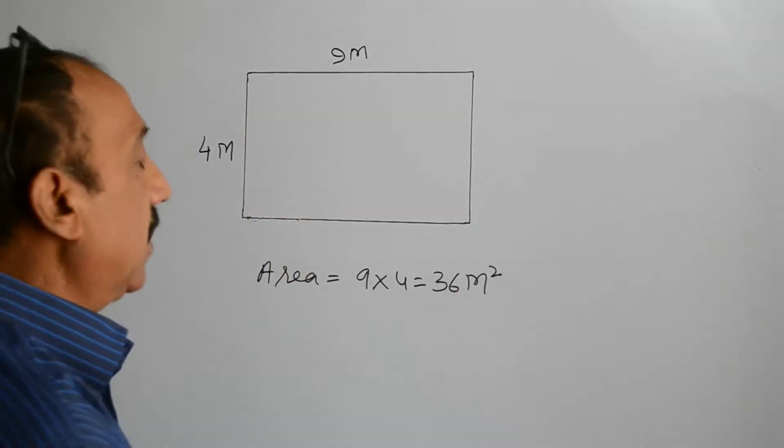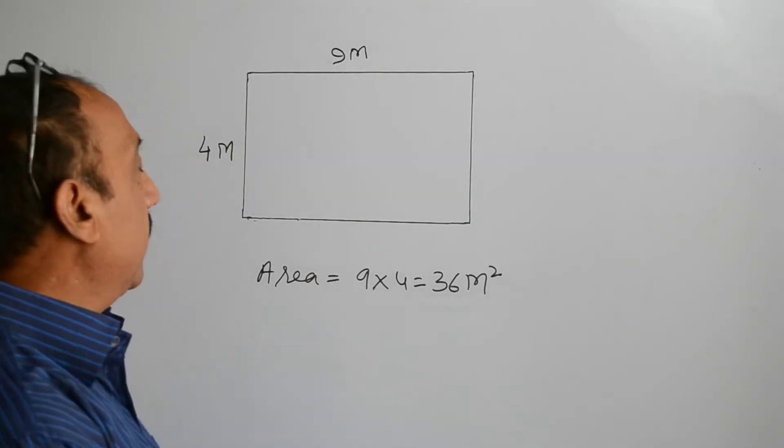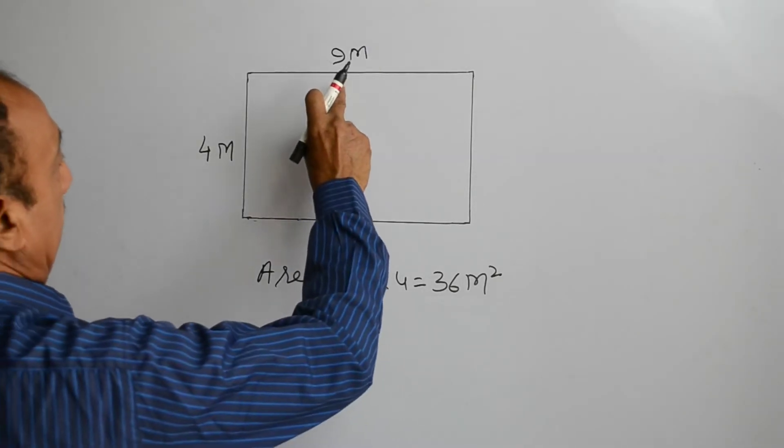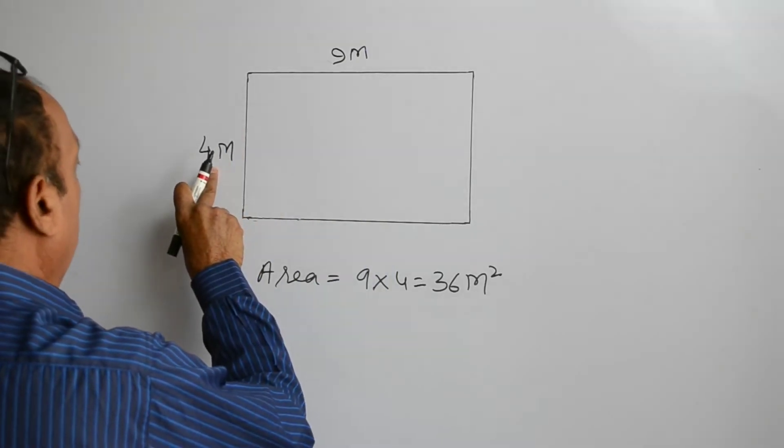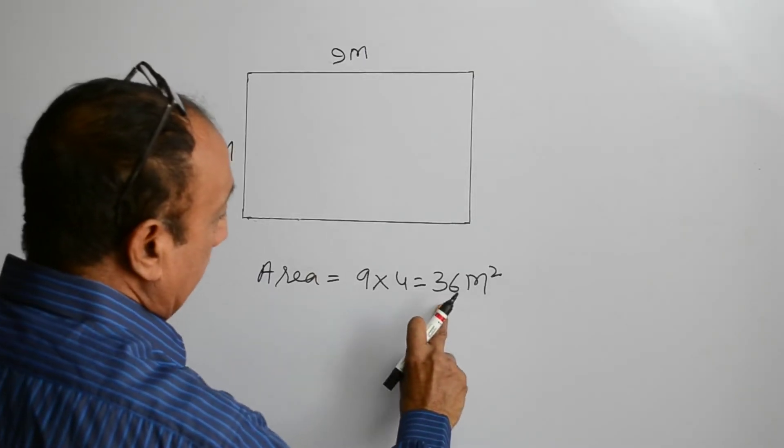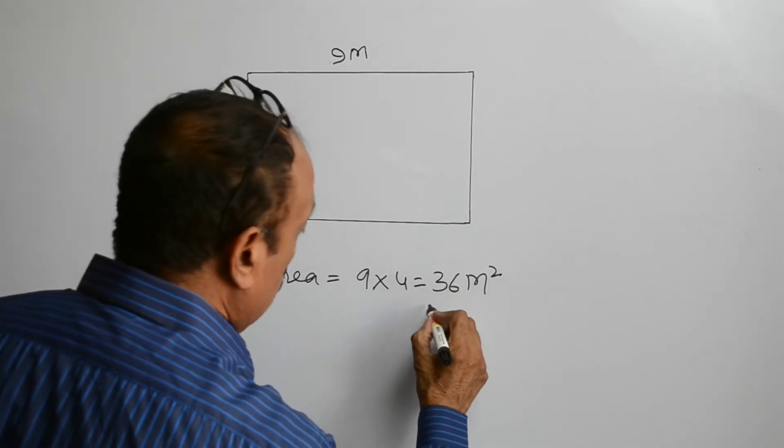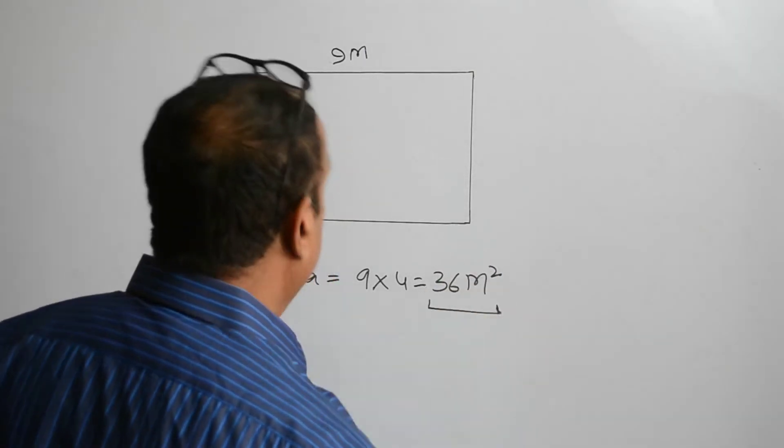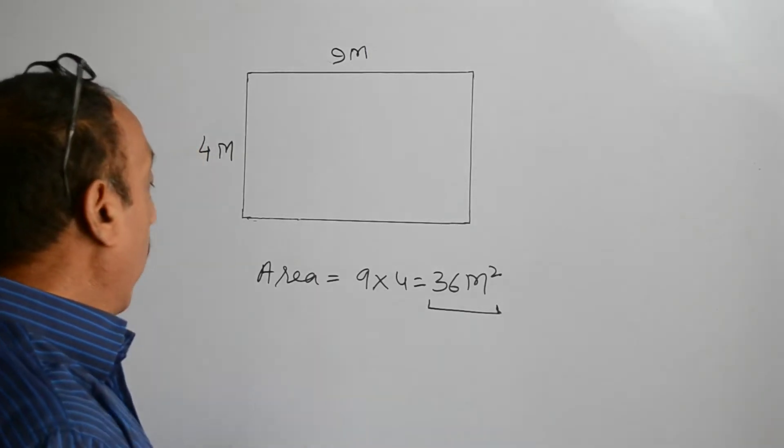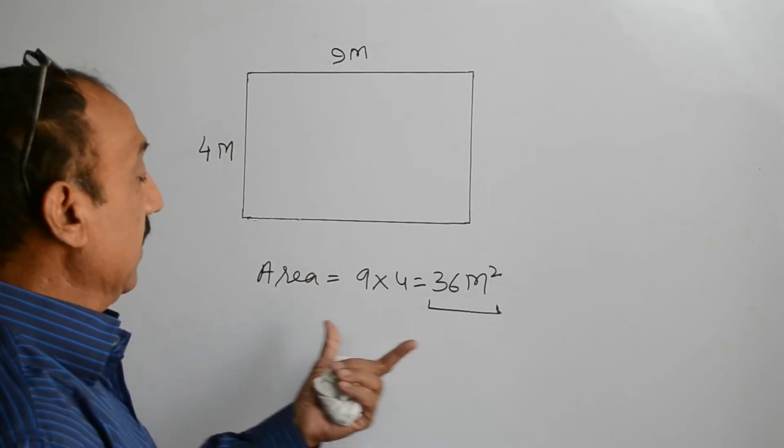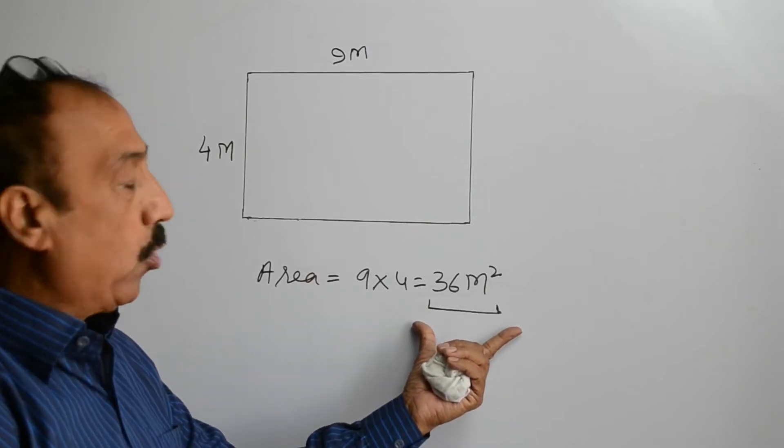For many students, it is very hard to understand that when length is in meters and the breadth is also in meters, why we write the area in square meters. In this video, we are going to discuss why the area is written in unit square.